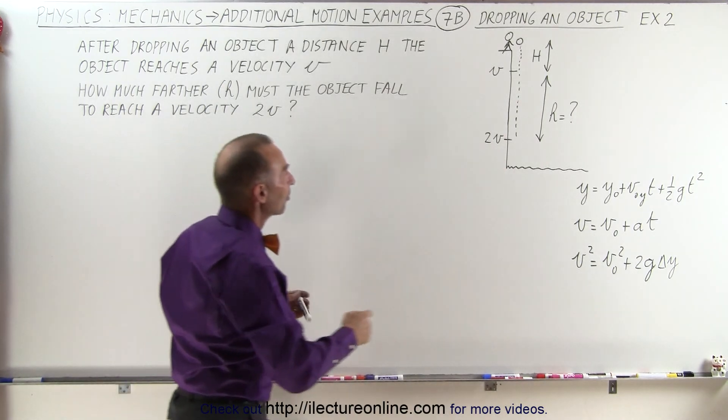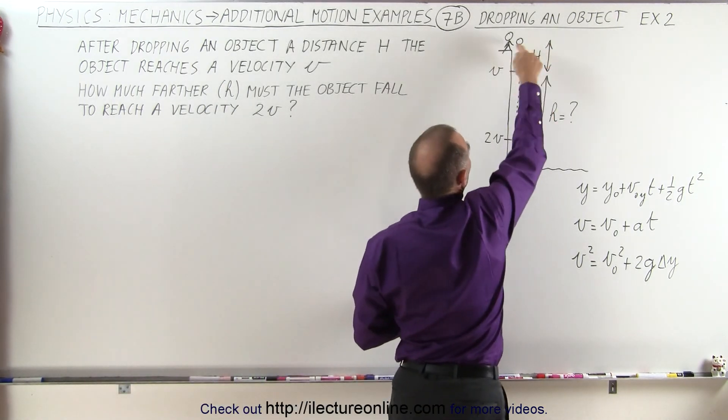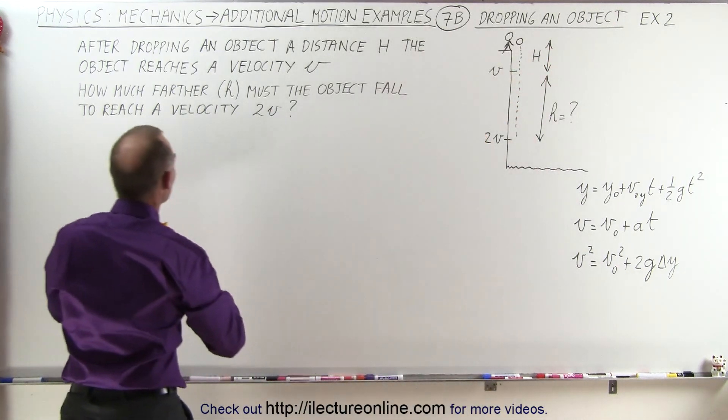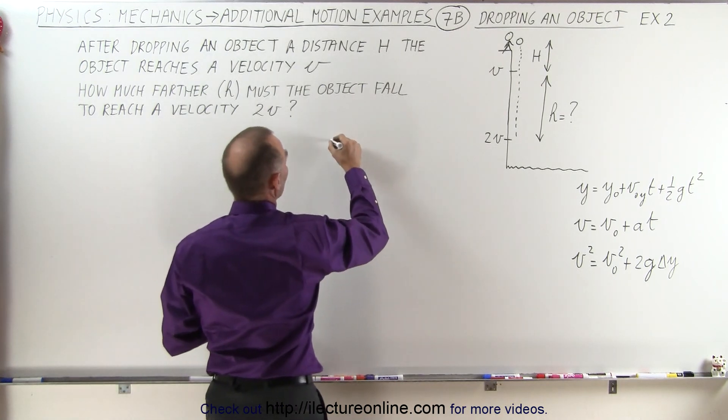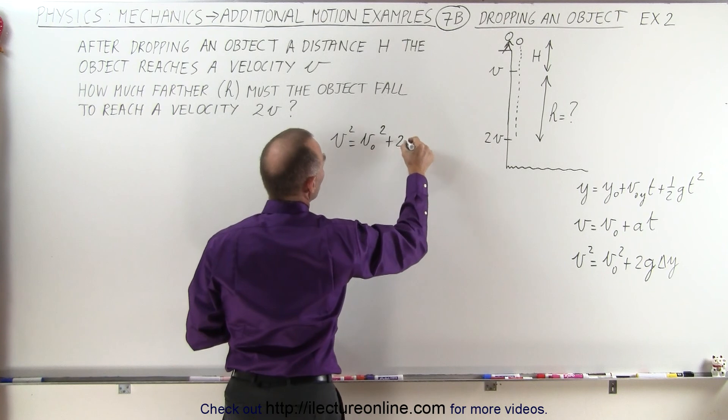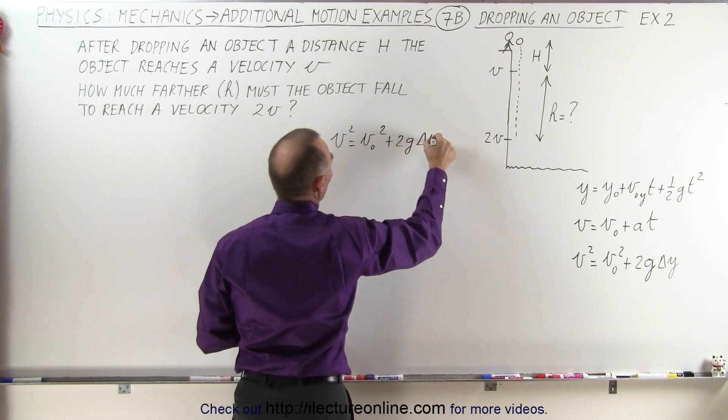So we're going to first apply it to the first part of the problem, the first drop when we go distance h, we reach a velocity v. So we use that equation here and we go v² equals v initial squared plus 2g times delta y.